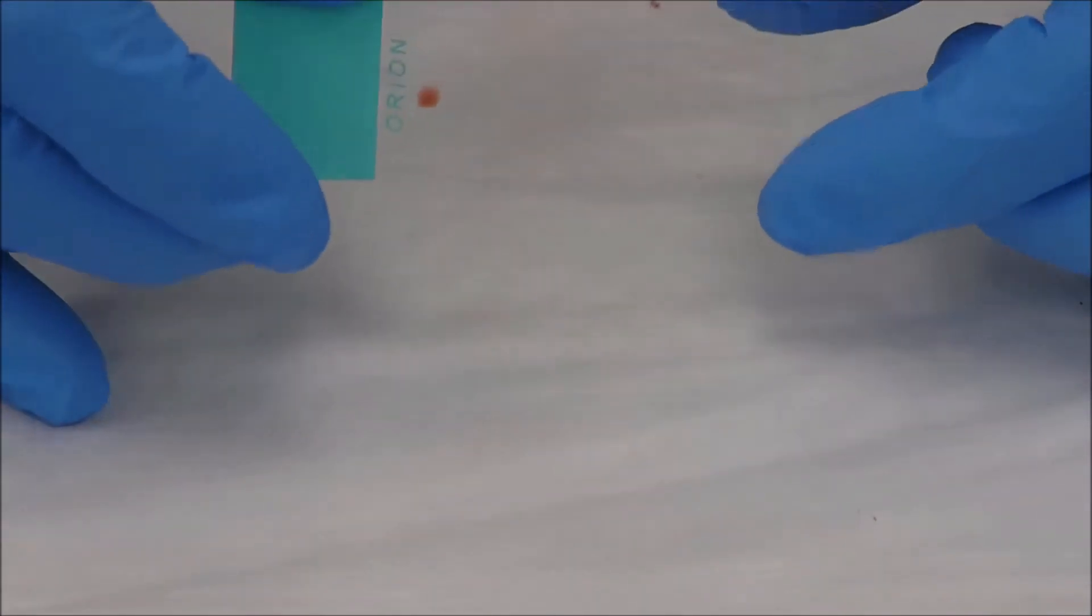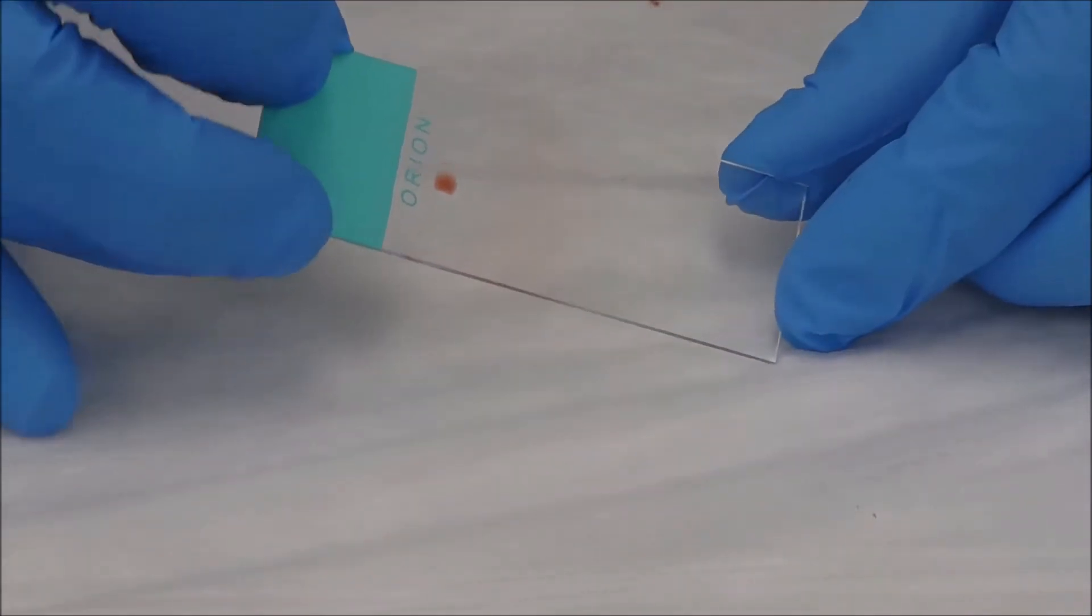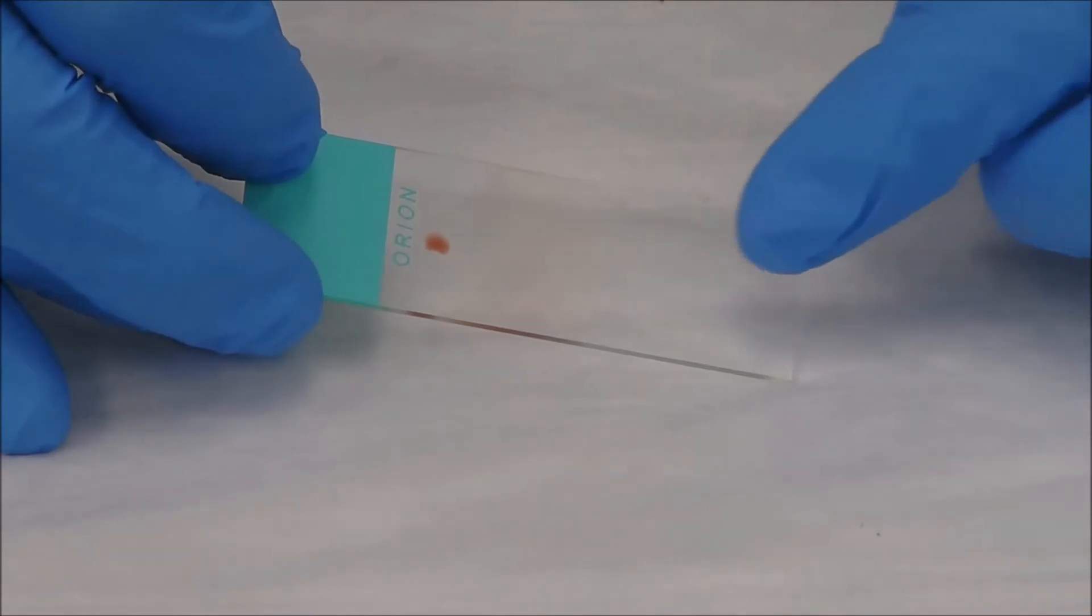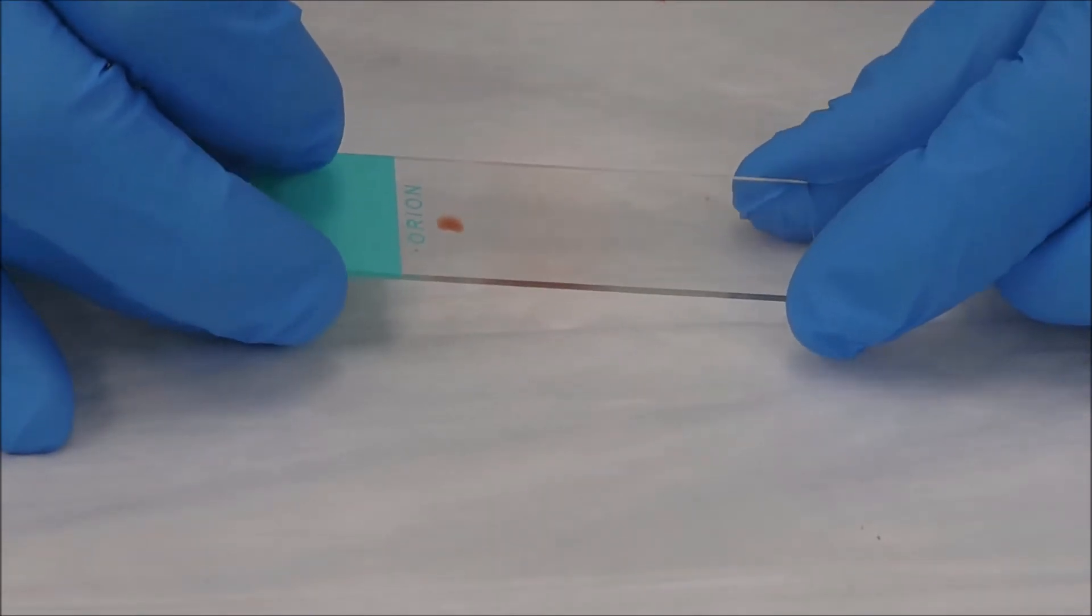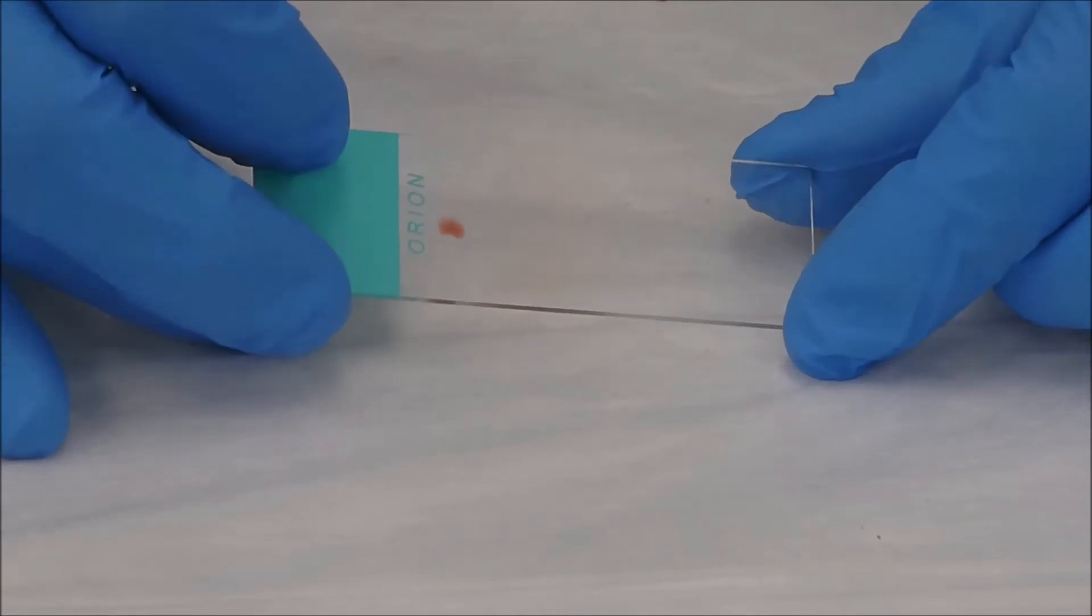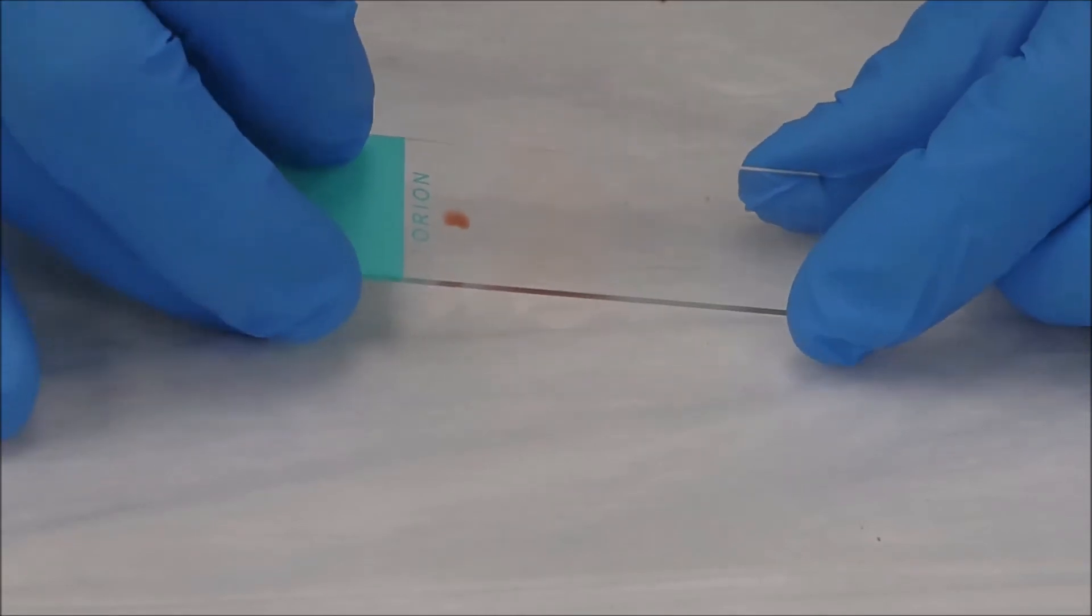Okay, so we've gotten a kind of short smear right there. So we're going to try to make a few other ones. We want the smear to go most of the way, about two thirds of the way down the slide, and then have a nice feathered edge. Because it's along that feathered edge that we're actually going to be counting the white blood cells. So let's try again.